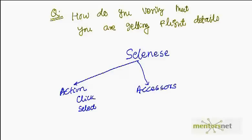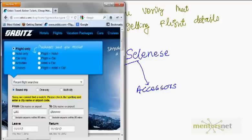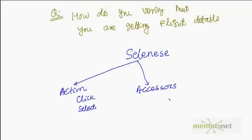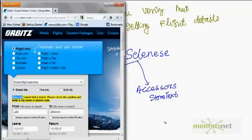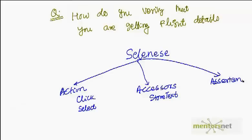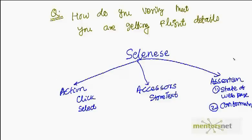Another kind of command is called Accessor. Accessor commands help you determine the state of the web page. For example, how do you capture information from the Firefox browser into Selenium? That is what accessor commands do. One example of an accessor command is called storeText — it helps you store the application state. The last category is called Assertion. Assertion commands help you do two things: first, figure out the state of the web page, and second, confirm whether it is as expected or not.